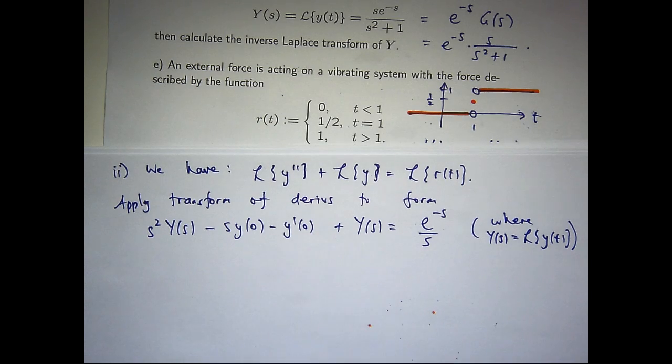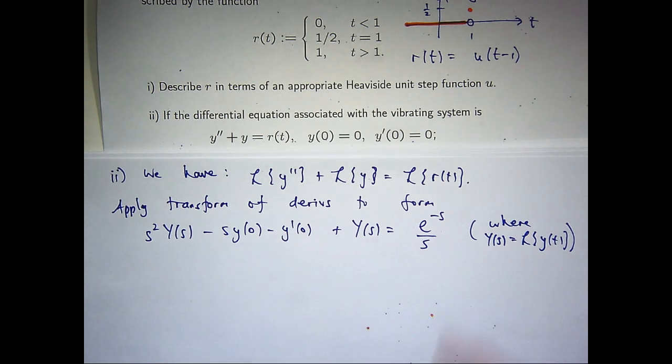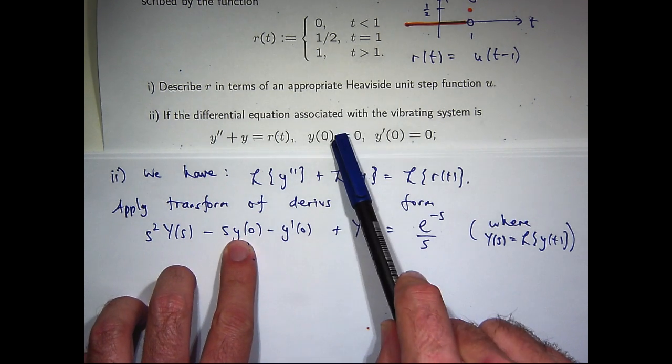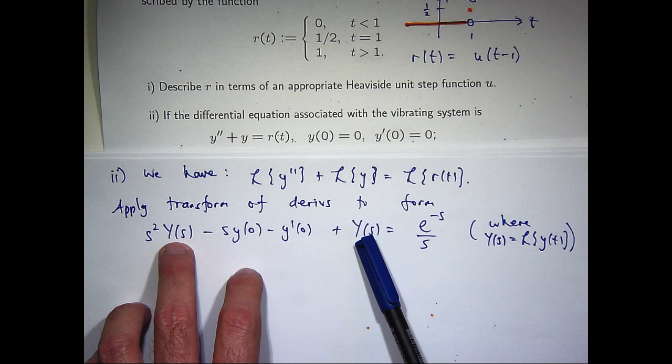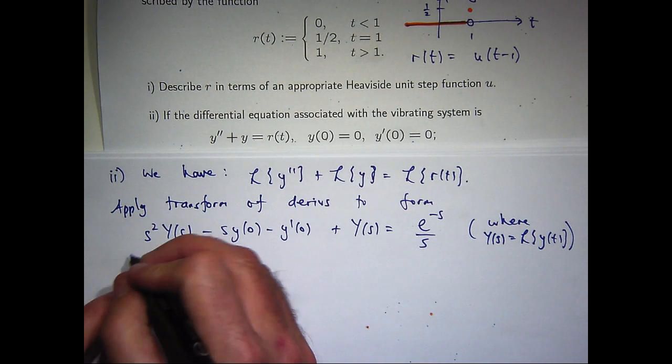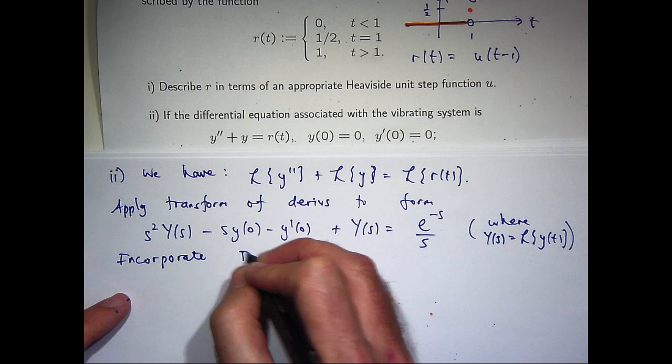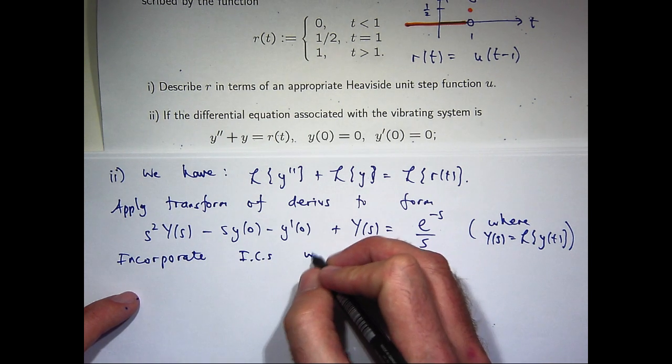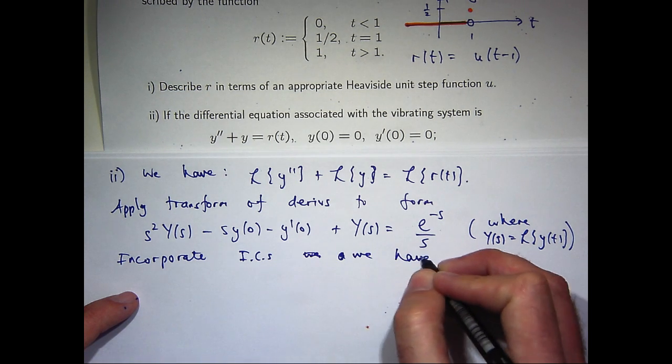So now what our job is, is to incorporate the initial conditions. So let's simplify this and solve this basic algebraic equation for big Y of s. So that's going to be 0 from that initial condition. That's going to be 0 from that initial condition. I'll have a common factor of big Y of s, then. So I can factorize and rearrange the initial conditions. We have the following.